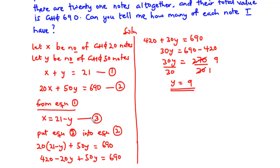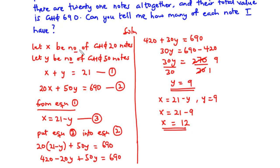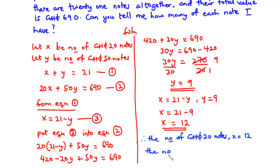Now we put Y into Equation 3: X equals 21 minus Y equals 21 minus 9, so X equals 12. Since X is the number of 20 CDs notes and Y is the number of 50 CDs notes, we conclude that the number of 20 CDs notes is 12 and the number of 50 CDs notes is 9. Now let's move on to question number 7.